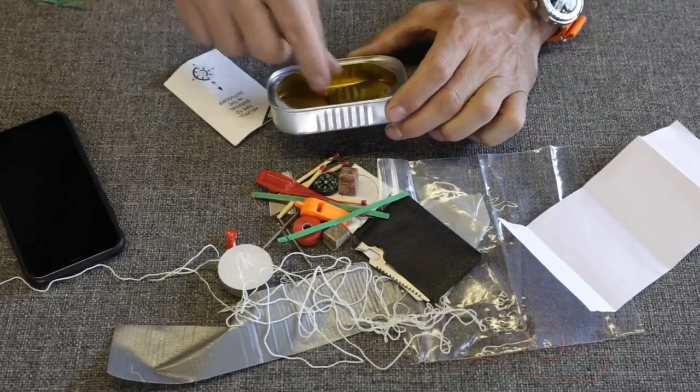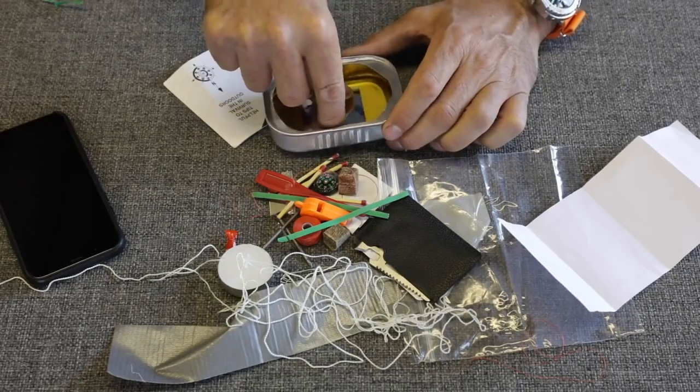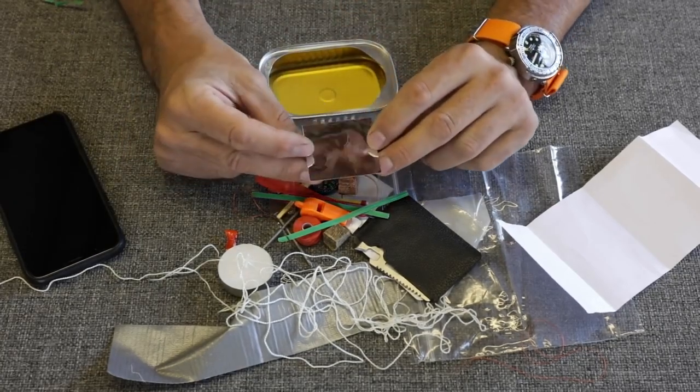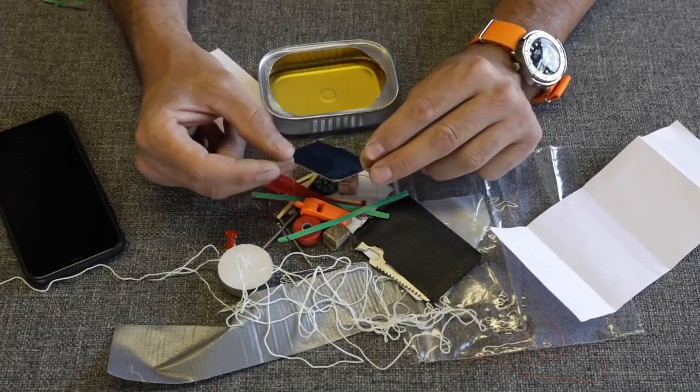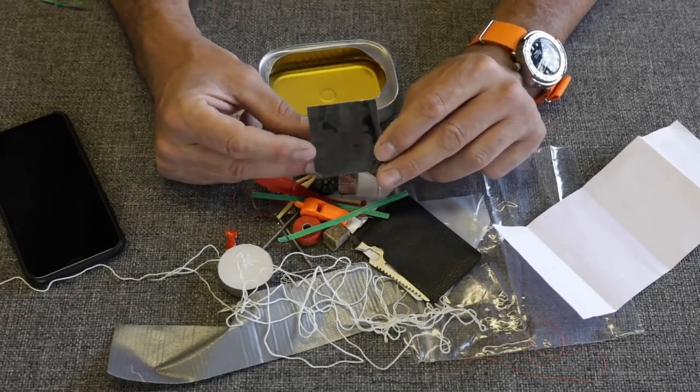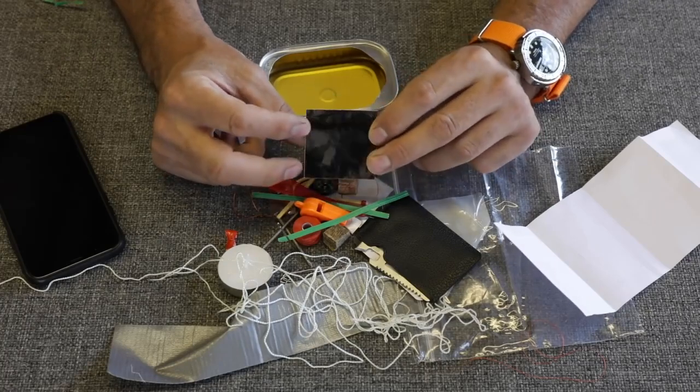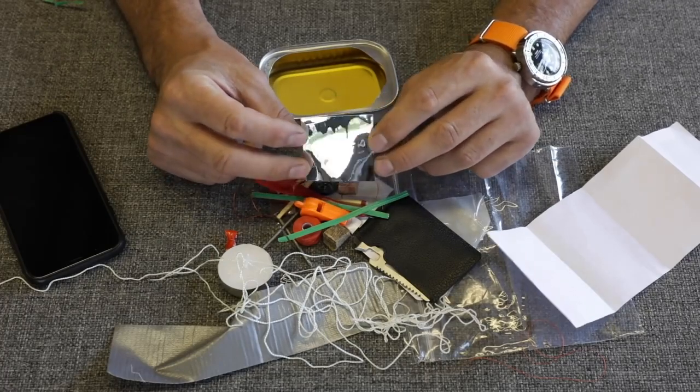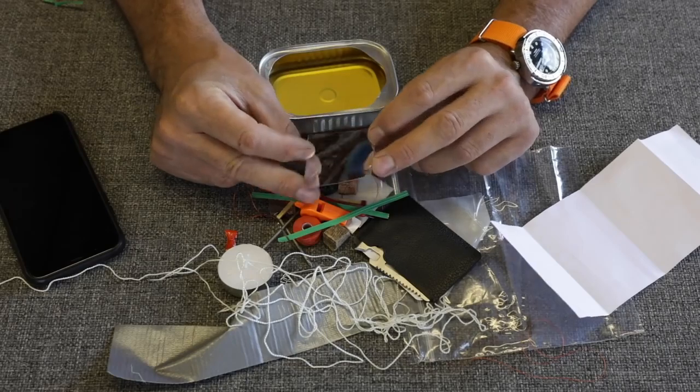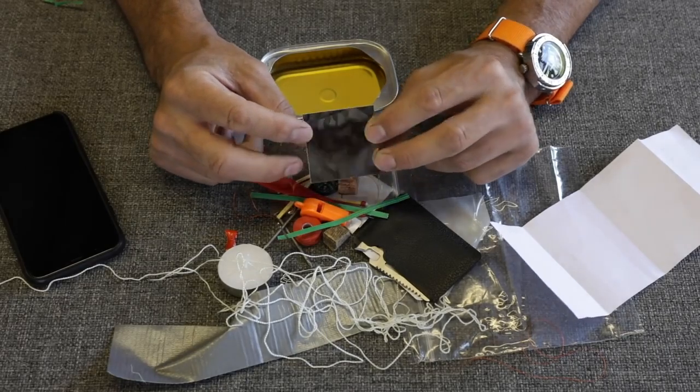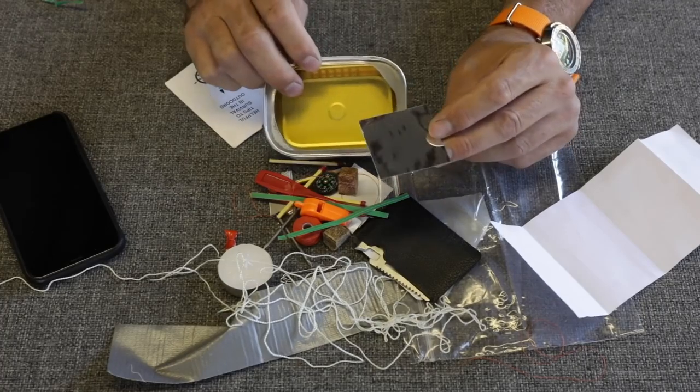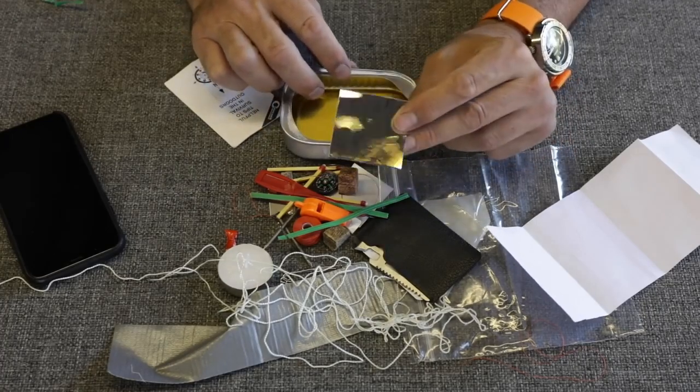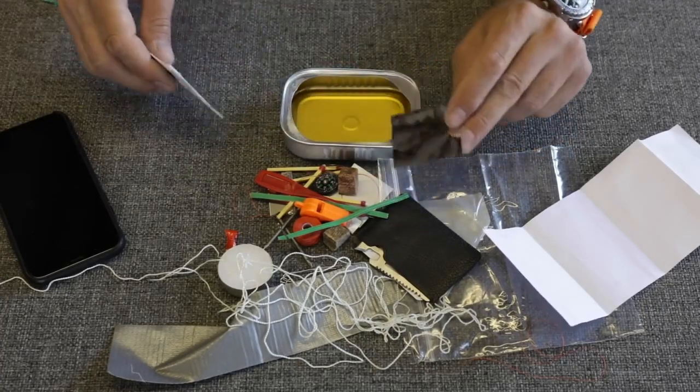We have, oh, signaling mirror. Is that legitimate? Probably not. I mean, yeah, you could get some flash off of it, but without having the aiming hole in it, like a proper signaling mirror, that would be difficult to use. I'd rather this be an extra five or ten dollars and put a real signaling mirror in there and some of the other upgrades.